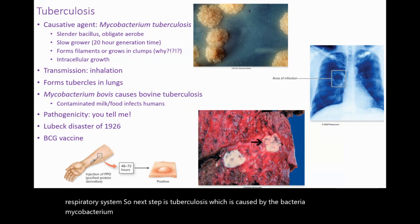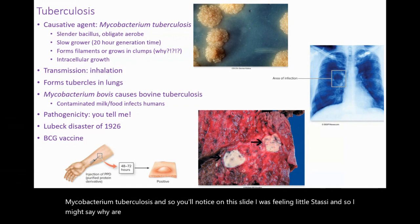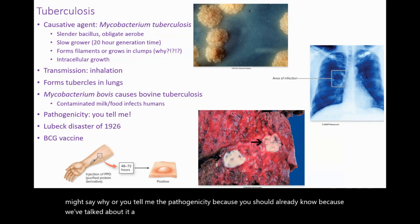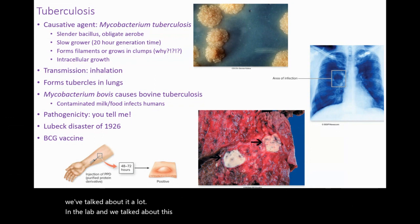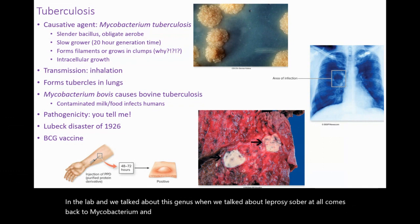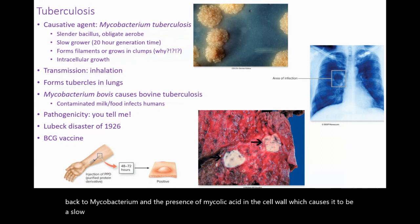So you'll notice on this slide I left the pathogenicity for you to fill in, because we've talked about it a lot in the lab. We talked about this genus when we talked about leprosy, so it all comes back to Mycobacterium and the presence of mycolic acid in the cell wall, which causes it to be a slow grower. And it makes it really hard to stain, diagnose, and even treat.